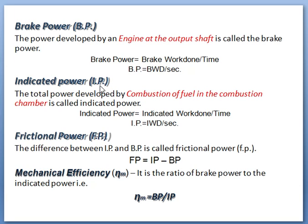Indicated power, in short I.P. — the total power developed by combustion of fuel in the combustion chamber is called indicated power. Indicated power is equal to indicated work done per second. Frictional power, F.P. — the difference between indicated power and brake power is called frictional power. So frictional power is equal to IP minus BP, that is indicated power minus brake power.